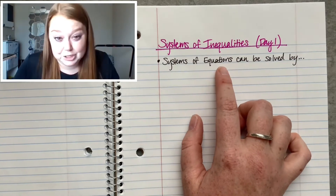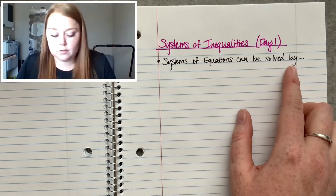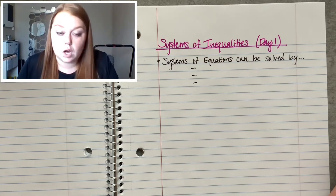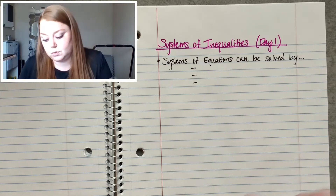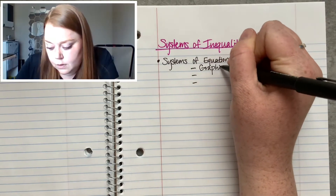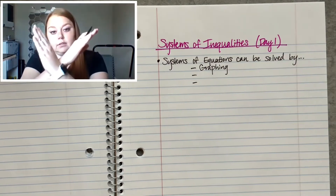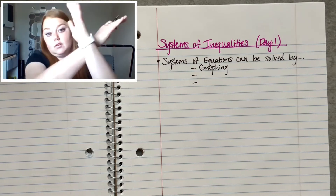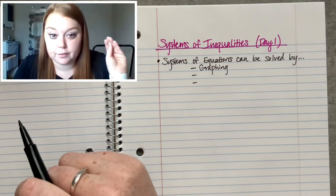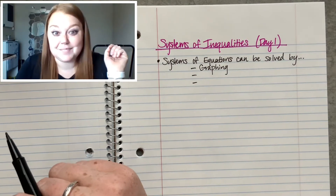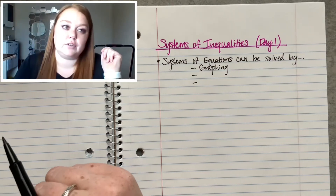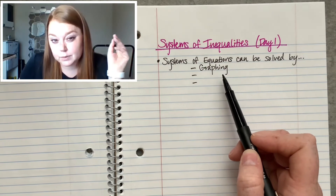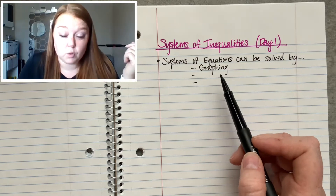So systems of equations — equal sign — can be solved by three ways that I taught you. The first way was by graphing. You would graph the two lines and wherever those two lines intersect is your solution. So if they cross at, say, negative 5 comma 3, then your solution is negative 5 comma 3 — x is negative 5, y equals 3. But graphing is not always the best because it doesn't always give you the exact answer if you have non-whole number answers.